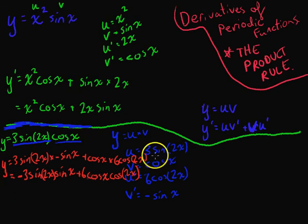6 cos x cos 2x. Okay, that's really it for the, there's more you can do there, but we're going to leave it there. That's all we really need to do for that kind of stuff.